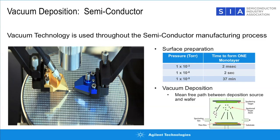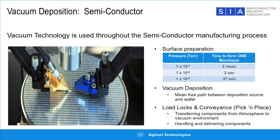Another reason vacuum is needed in deposition is to ensure particles travel directly from the source onto the surface without being knocked off course. They're driven into the surface by a change in electrical potential to make the coating. Vacuum is also used to move particles around — pick-and-place operations. Load locks allow moving a part from an atmospheric environment into a vacuum environment through a series of pressure drops, without breaking the high or ultra-high vacuum inside the main chamber.